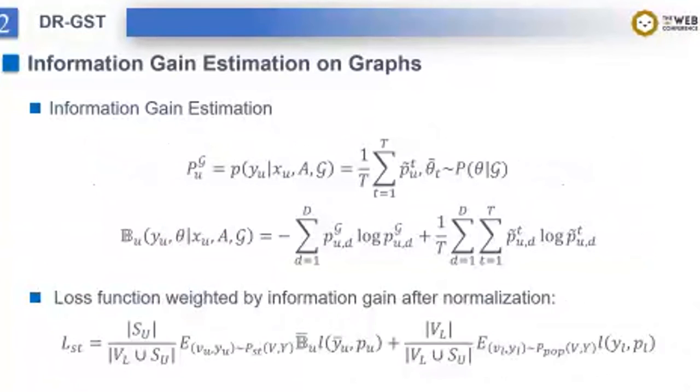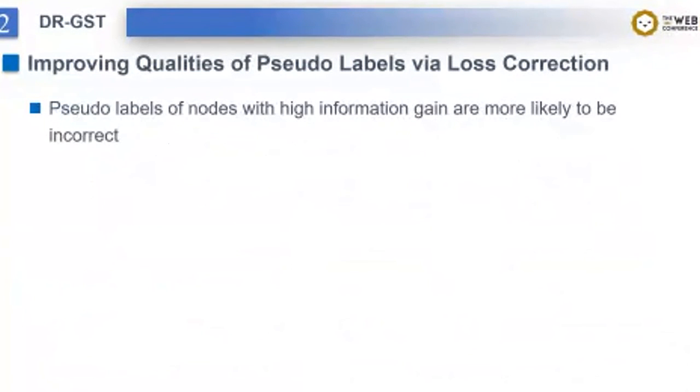The core idea for dropout or dropedge variational inference is to calculate the probability vector T times at inference. Then, we could calculate the information gain as follows. With such an information gain for each node, after normalization, we could obtain the final loss function.